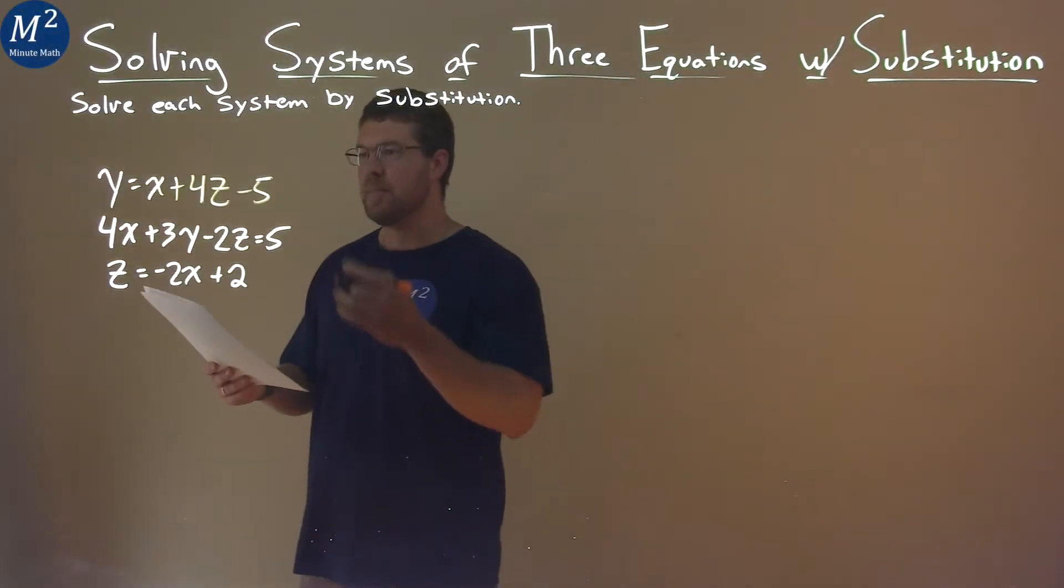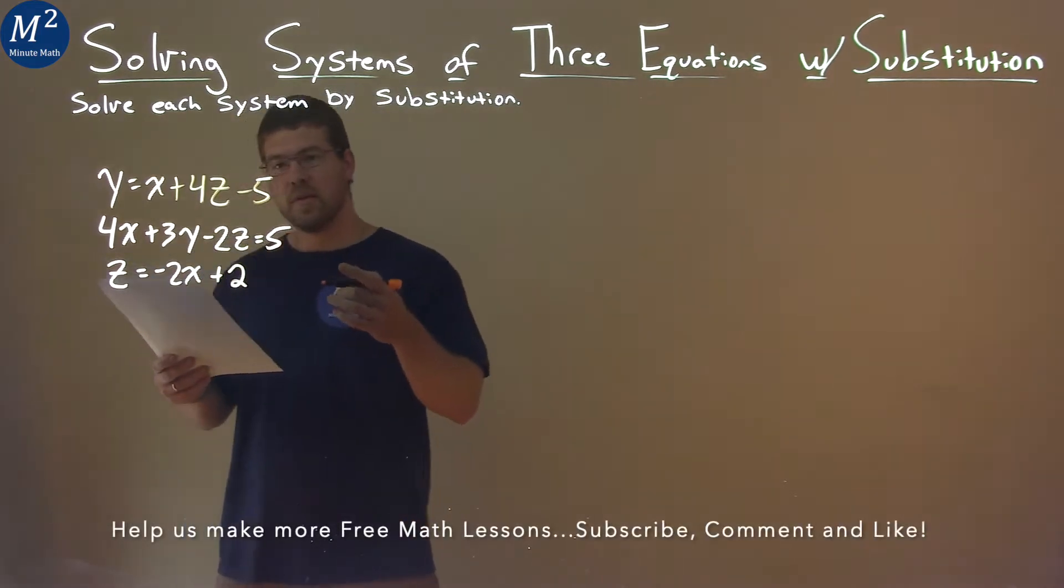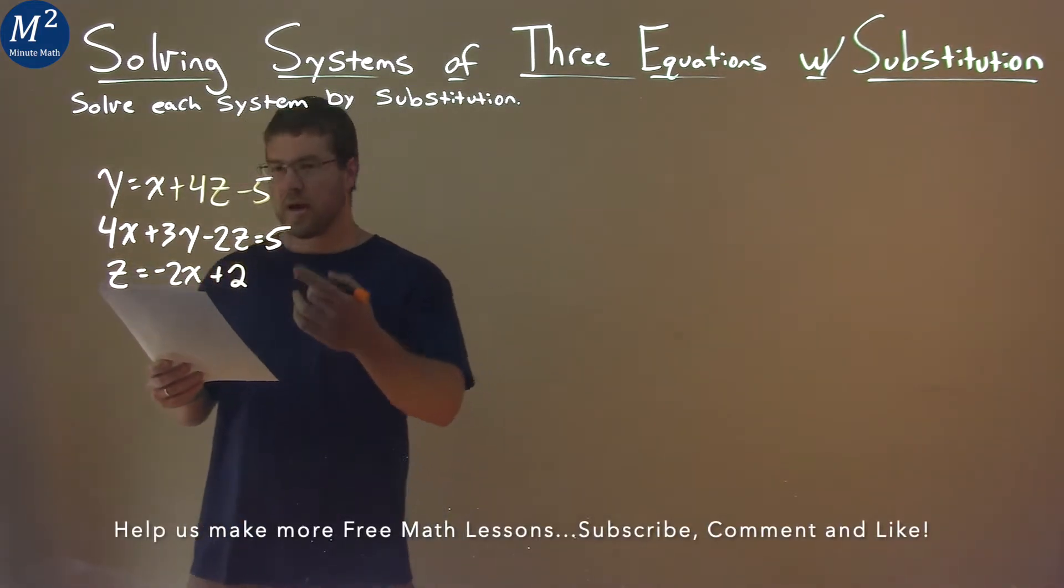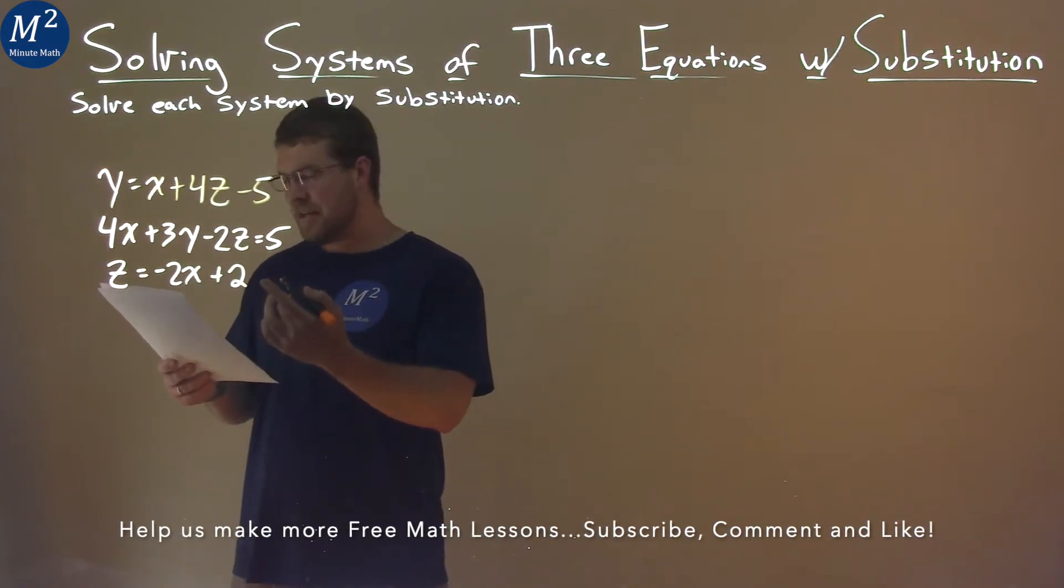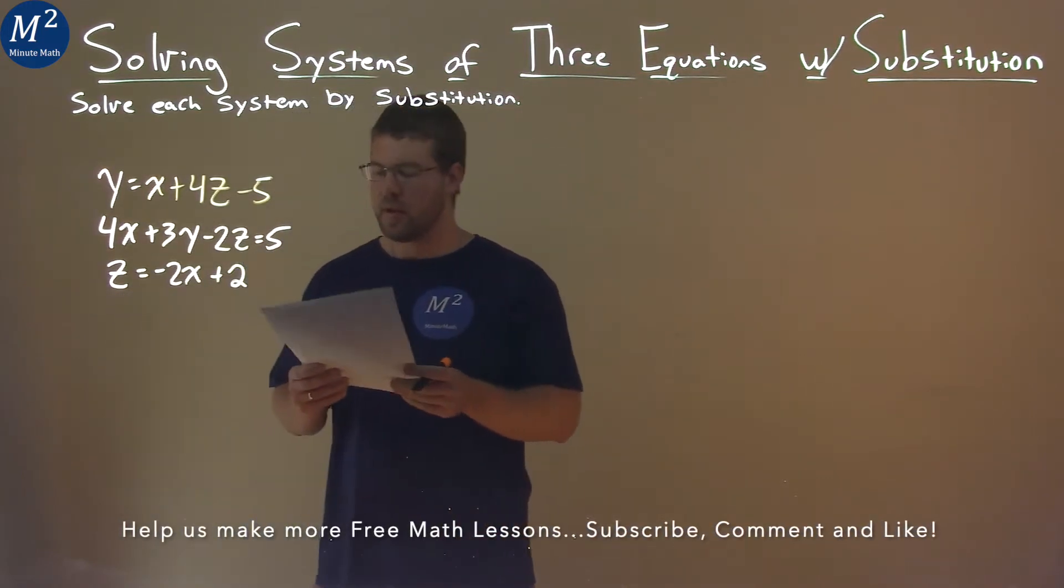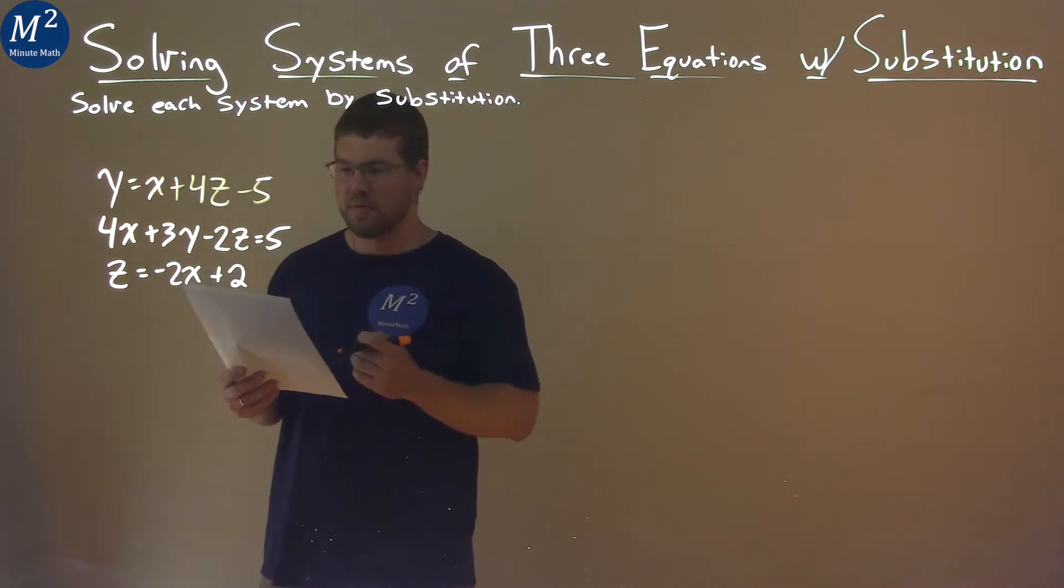We're given this problem right here: y = x + 4z - 5, 4x + 3y - 2z = 5, and z = -2x + 2. And we want to solve this system by substitution.